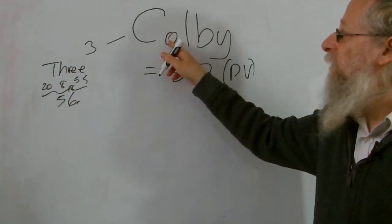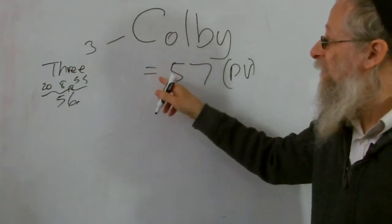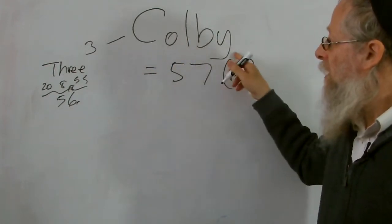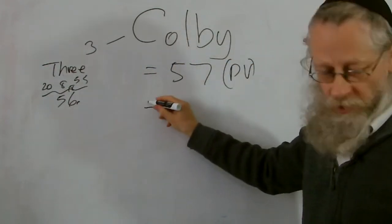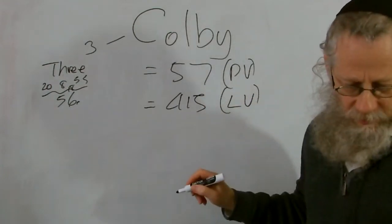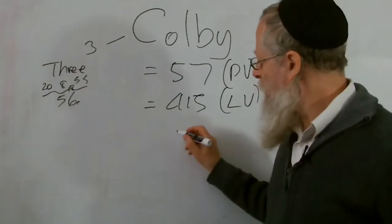O is 15, the word 15 is 65. L is 12, the word 12 is 87, et cetera. And if I add those together, I get what I call the large value, which is 415. That's the LV, the large value.